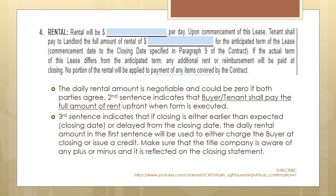Paragraph 4 talks about the amount of rent charged on a daily basis. The daily rental amount is negotiable — it could be zero if both parties agree — but typically it would reflect what the seller is absorbing on a daily basis, especially if the property is mortgaged. The second sentence indicates that the buyer-tenant shall pay the full amount of rent up front when the form is executed, so the seller will have all the money in hand prior to the start of the buyer's tenancy.